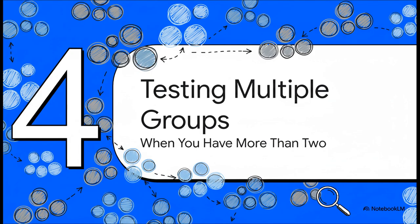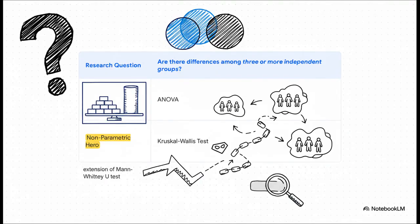So, comparing two groups? Sorted. But we all know research is rarely that simple. What happens when you have three, four, or even more groups you need to compare all at once? When you're comparing three or more independent groups, the usual go-to parametric test is ANOVA. Well, its non-parametric equivalent is the Kruskal-Wallis test. You can just think of it as an extension of the Mann-Whitney-U-Test, but for multiple groups. It'll tell you if there's a significant difference somewhere among your groups, based on their average ranks.